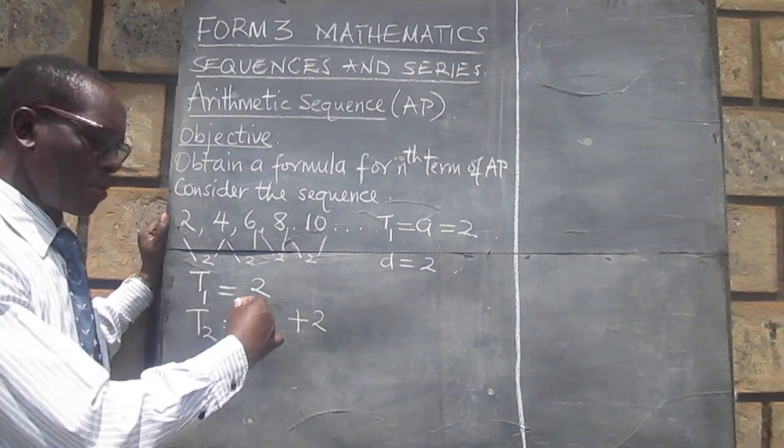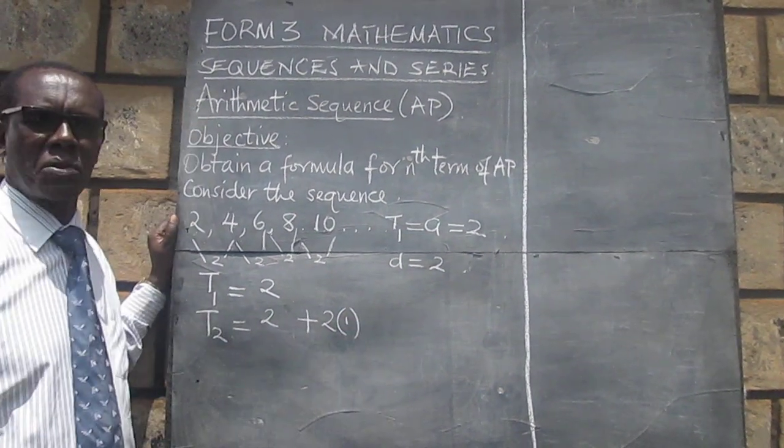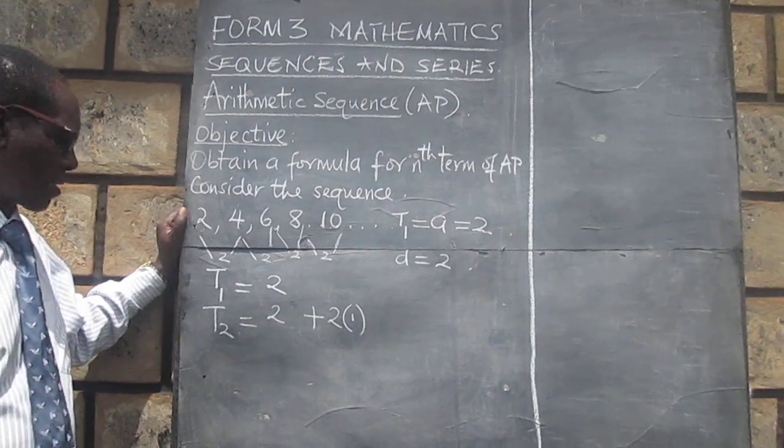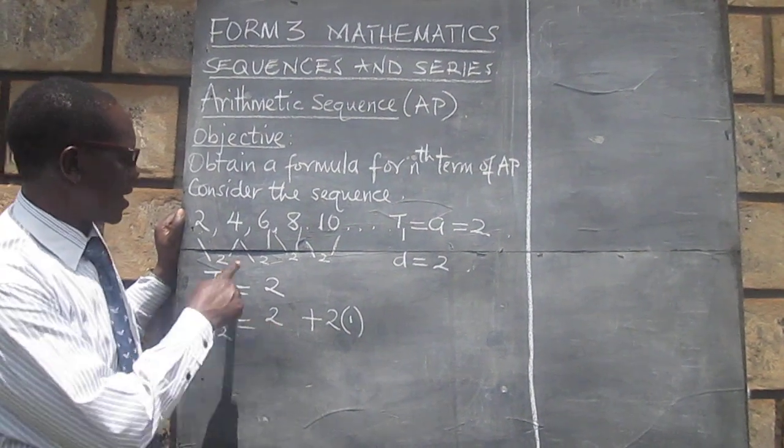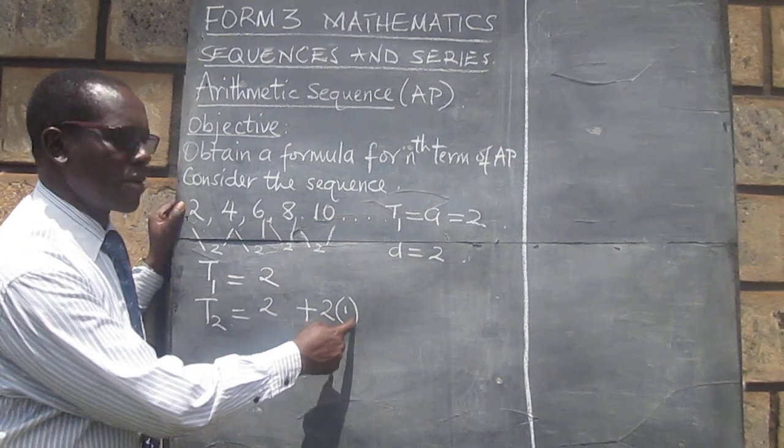And for purposes of getting the formula, let's say 2 times 1. The second term equals the first term. We got the first term as 2 plus 2 times 1.